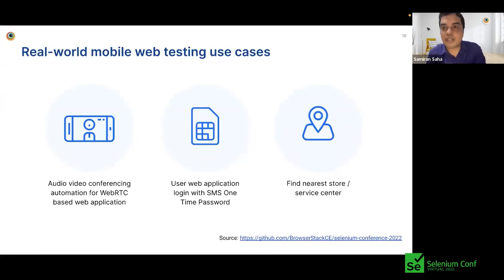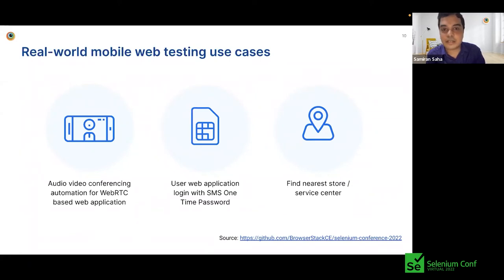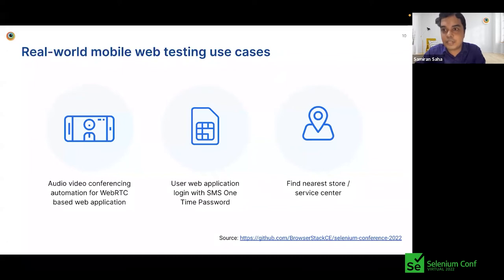We have three demos to discuss. The first is about audio-video conferencing automation on web browsers, both mobile and desktop, demonstrating a three-way conference. The second is SIM card testing use cases like SMS-based OTP for logging into an application. The third use case is how geolocation or GPS can be tested to find the nearest store closest to you. I'm going to jump straight into the demo of the first one — audio-video conferencing — before deep diving into the code.